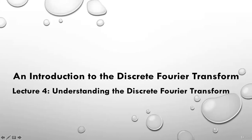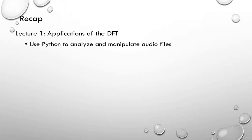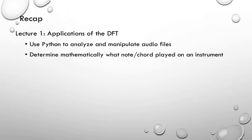Welcome back to an introduction to the discrete Fourier transform. This is lecture 4, where we try to understand the math behind the discrete Fourier transform. I want to do a quick recap of the previous lectures. In the first lecture, we introduced the discrete Fourier transform and applied it using Python. We analyzed audio files and were able to programmatically determine what note or chord is played on an instrument — with just a few lines of Python code.